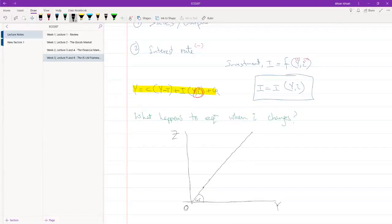This is a 45 degree line, which means at each of these points, all of these points, the value of Z and the value of Y is equal. So along this line we have Z equal to Y, or we can also call this the equilibrium line.